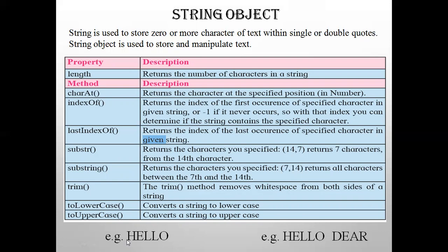For example, take the word 'hello'. If I write `charAt(1)`, the string is indexed from zero: H is at position 0, E is at position 1, L at 2, L at 3, O at 4. So `charAt(1)` will display the answer as E — the character at index position 1.